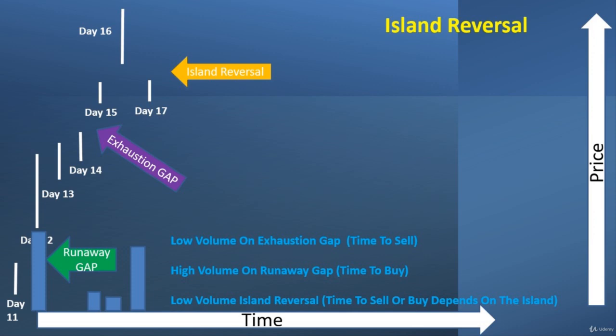You can tell by looking for that low volume on the exhaustion gap — low volume tells you it's time to sell. If there's high volume on a runaway gap, that tells you to buy. We saw previously on day 12 that runaway gap where it was time to buy. But on a low volume island reversal, you're going to have that low volume on day 16 in this example. The time to sell or buy depends on the island — you're waiting for the island to form, so we don't truly know it on day 16. We need day 17 to show what's going to happen.